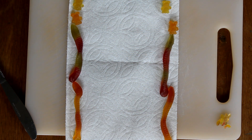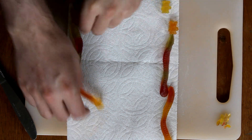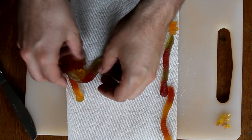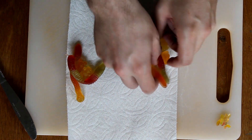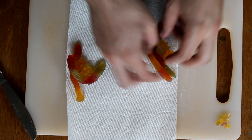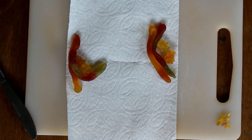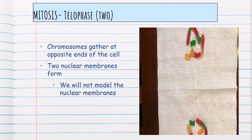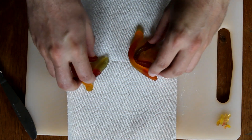Now in telophase, the chromatids start clumping together on their respective halves, binding together and getting ready to go back to normal — transitioning away from chromosomes and simply becoming DNA again. Two nuclear membranes start to form on the opposite sides of the cell.